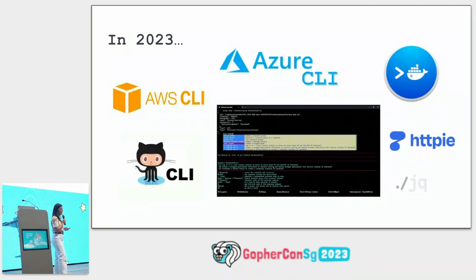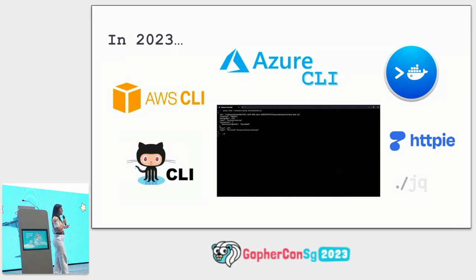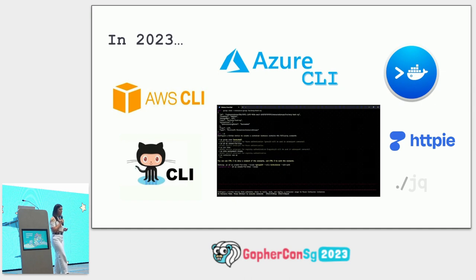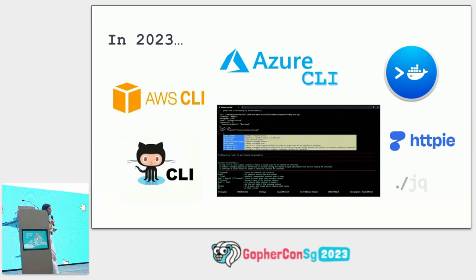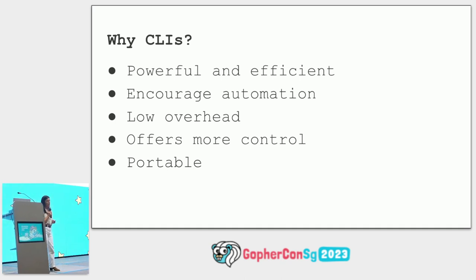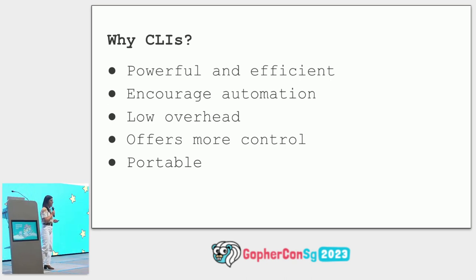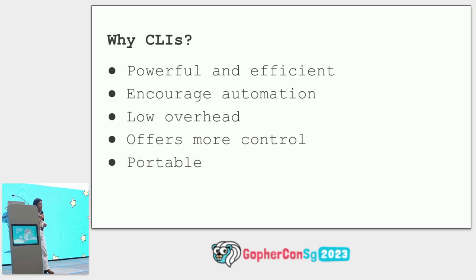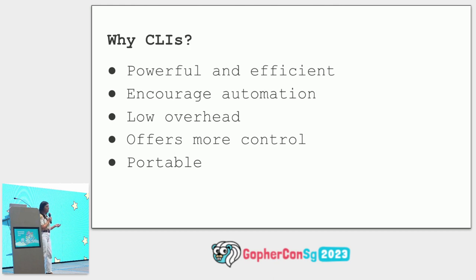Let's talk about today. Many of you use CLIs all the time — primarily GitHub, Docker is another popular CLI — and they're amazingly powerful, often preferred over graphical user interfaces. Why are CLIs preferred? It's primarily for their efficiency and raw power. They have low overhead, so they're very easily integrated with scripts, encouraging tooling and automation. Also, they are portable — it's easy to use Go to cross-compile and have these CLIs run on different operating systems.